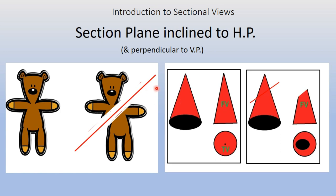This is the third case: when the section plane is inclined to HP you can see the plane being inclined. I am showing you just a line here, but please do not make the mistake of thinking it cuts only half — it will cut the solid completely, not just the half portion. That is why nothing remains on the removed side.